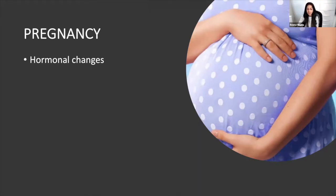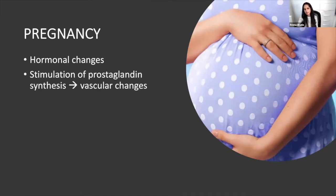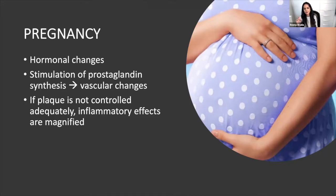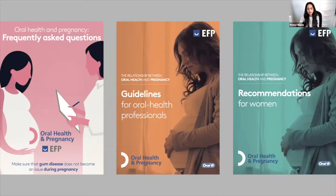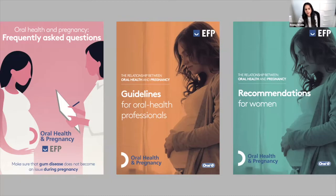In pregnancy, hormonal changes make the gums more sensitive, so even a little bacteria causes an exaggerated response. That response may be edematous — probing with profuse bleeding — or proliferative, which is your classic pregnancy epulis. There are really good guidelines on the EFP website that are free to download — definitely check those out.